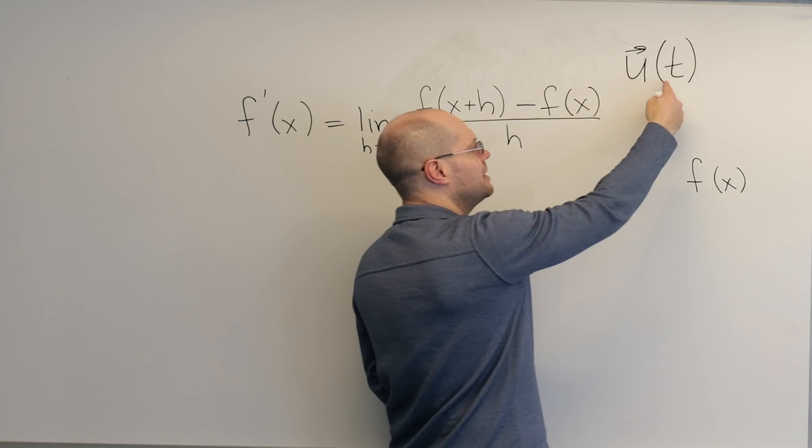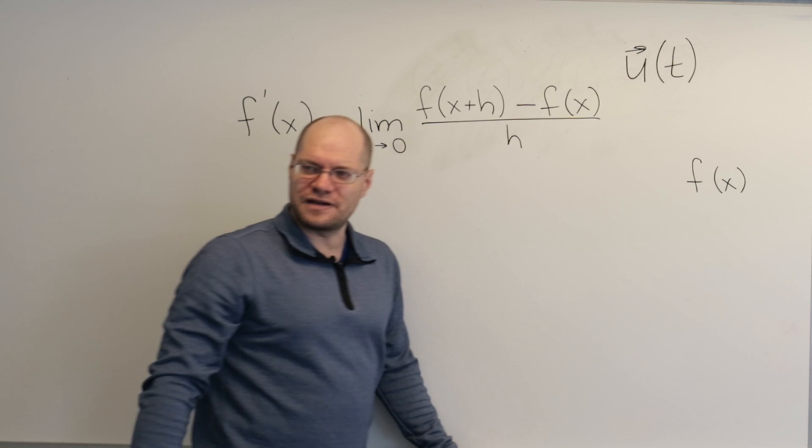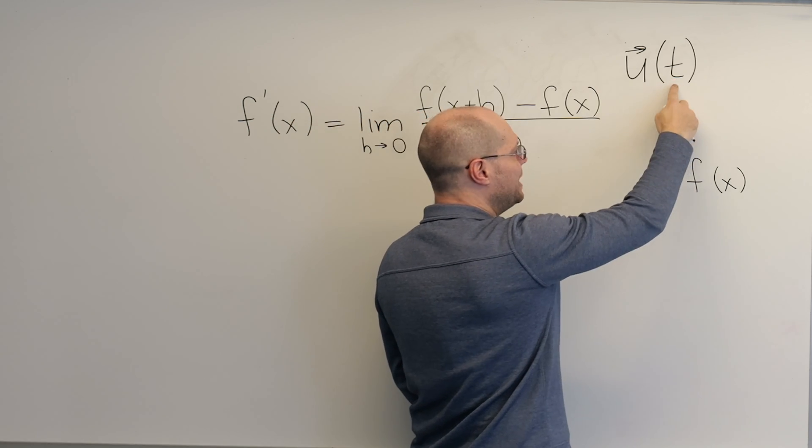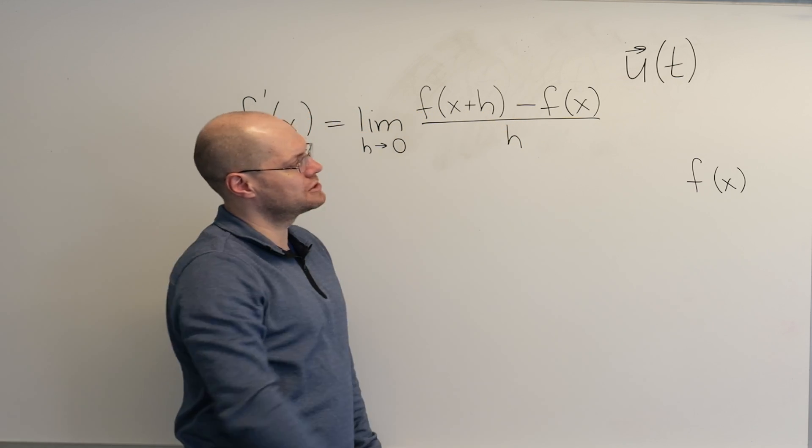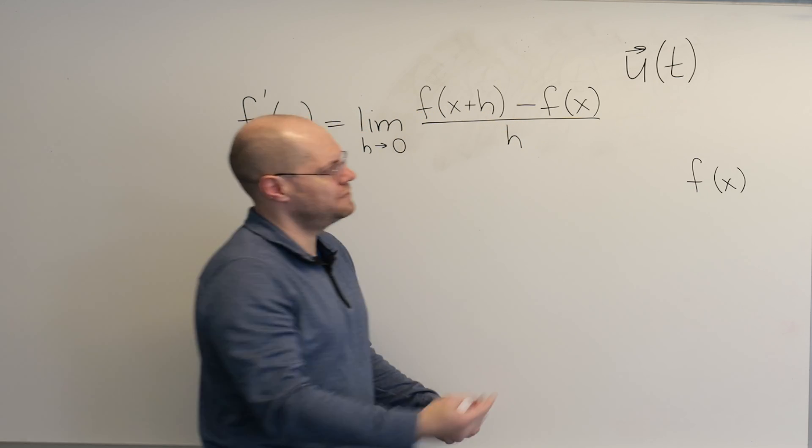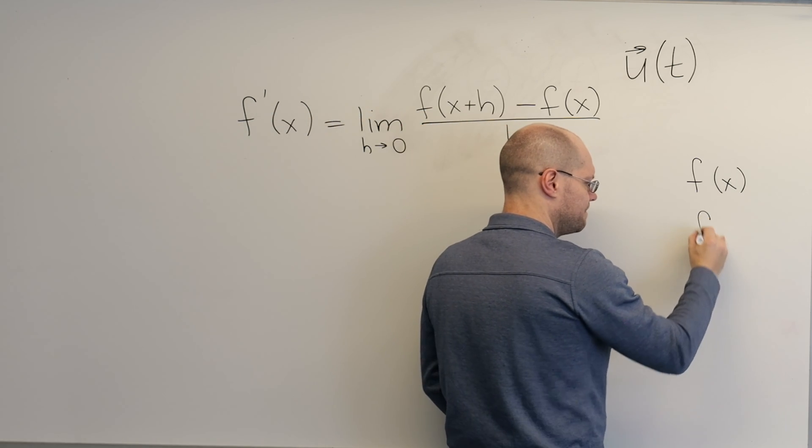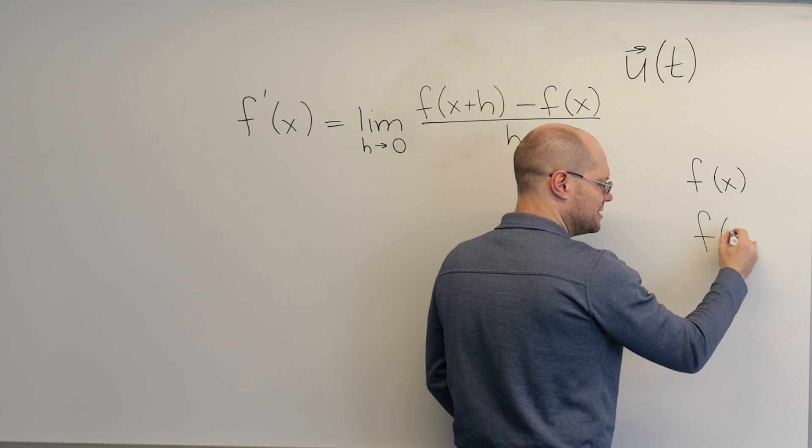And you give it another number, and it gives you back another vector. And you can put in a number, and then a nearby number that differs from it by just a small value h, and it'll give you, hopefully, a slightly different vector.